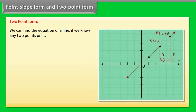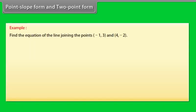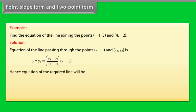Two-point form: We can find the equation of a line if we know any two points (X1, Y1) and (X2, Y2) on it. Example: Find the equation of the line joining the points (minus 1, 3) and (4, minus 2). Solution: The equation of the line passing through (X1, Y1) and (X2, Y2) is Y minus Y1 equals [(Y2 minus Y1) by (X2 minus X1)] times (X minus X1). Hence, the equation of the required line is X plus Y minus 2 equals 0.